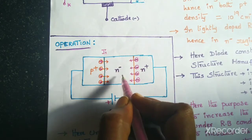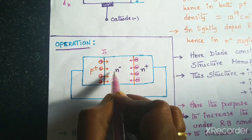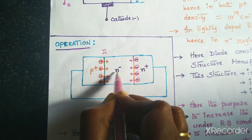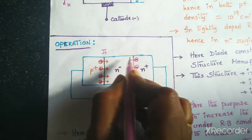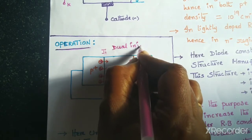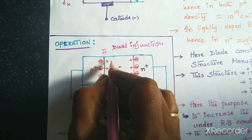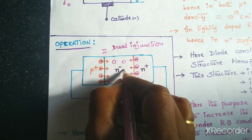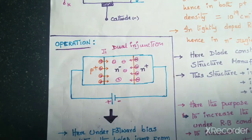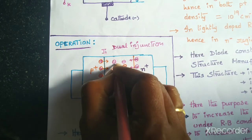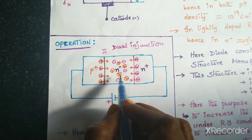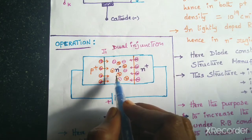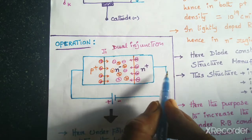The positive charge carriers injected from the P plus layer into the N minus layer attract the negative charge carriers from the N plus layer into the N minus layer. Because of this dual injection — holes from P plus and electrons from N plus — recombination takes place in the N minus layer. Because of this recombination, the resistance in the N minus layer gets decreased, and the device gets turned on.